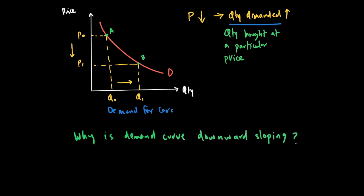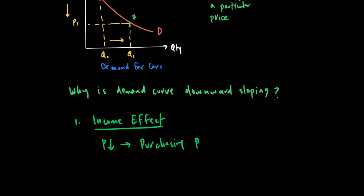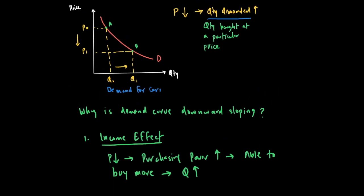We identify two reasons why the demand curve is downward sloping. The first is what we call the income effect. The income effect says that when the price of a good goes down, our purchasing power goes up. Because our purchasing power goes up, we are able to buy more, and you will see quantity demanded go up.